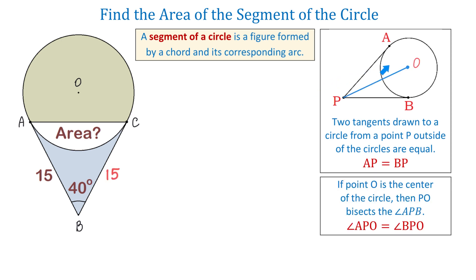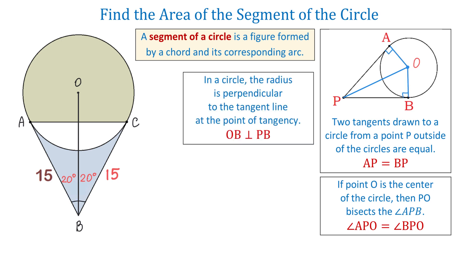Next, if point O is the center of the circle, then PO bisects the angle APB, so the angle APO equals the angle BPO. In our figure, if we connect point B with the center of the circle, we form two 20 degree angles. Also, in a circle the radius is perpendicular to the tangent line at the point of tangency, so connecting the center with each point of tangency forms two right angles.